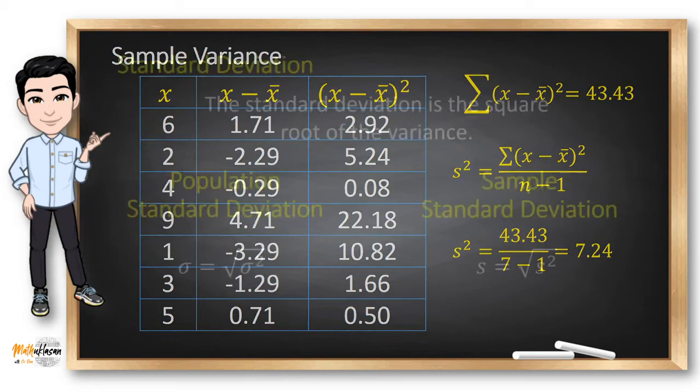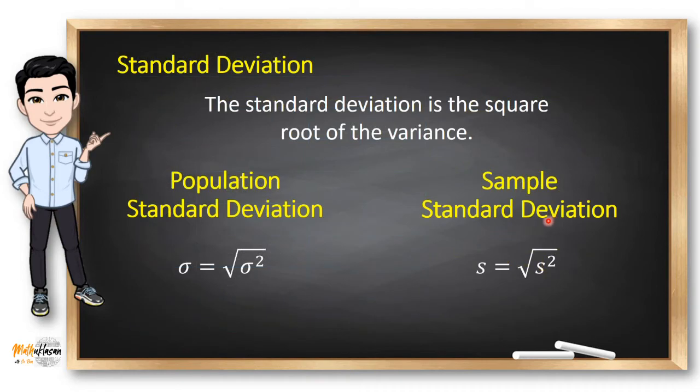The next type of measure of variation is the standard deviation, which is just the square root of the variance. If you want to get the population standard deviation, all you need to do is to get the square root of your population variance. And if you want to get the sample standard deviation, you just need to get the square root of the sample variance.